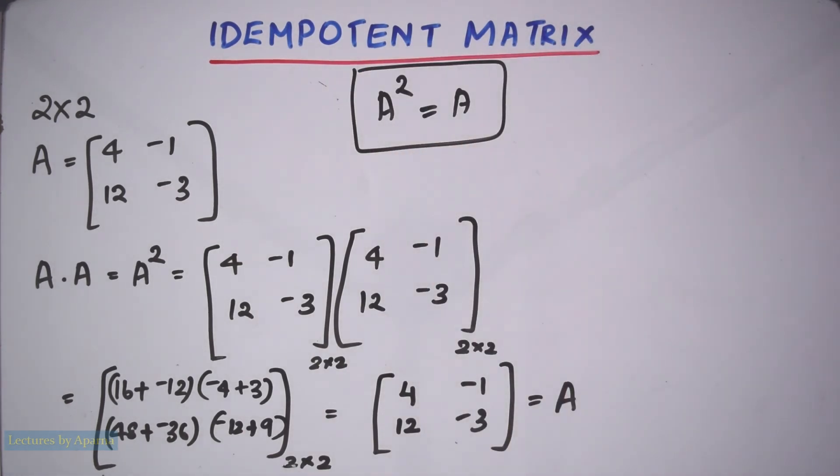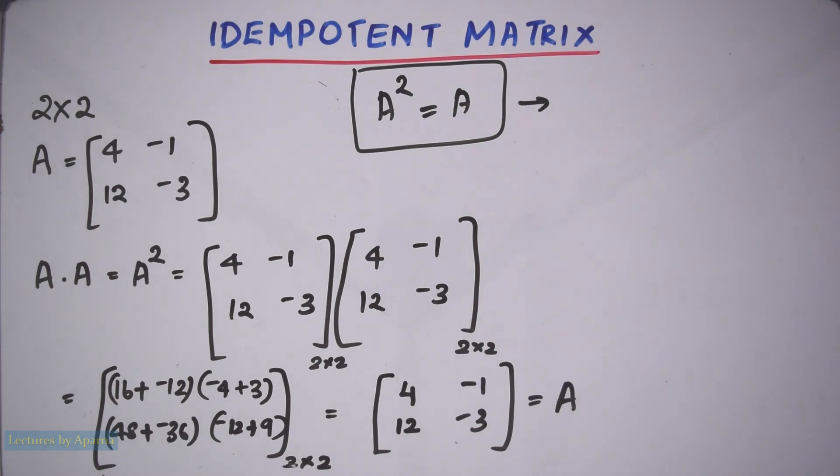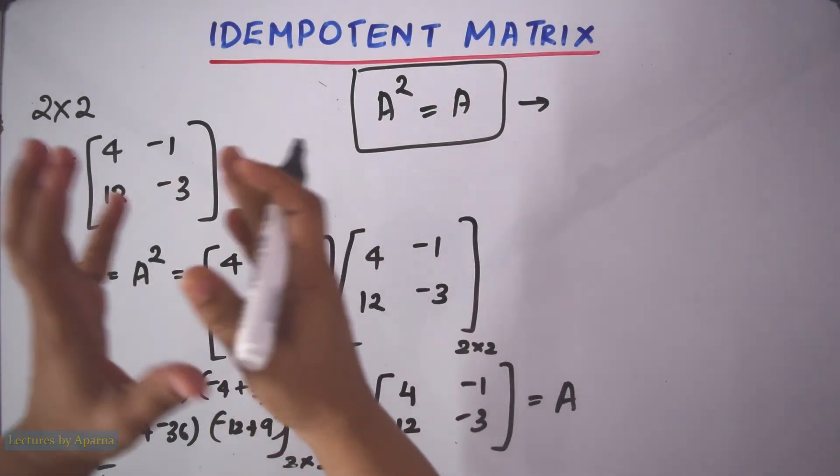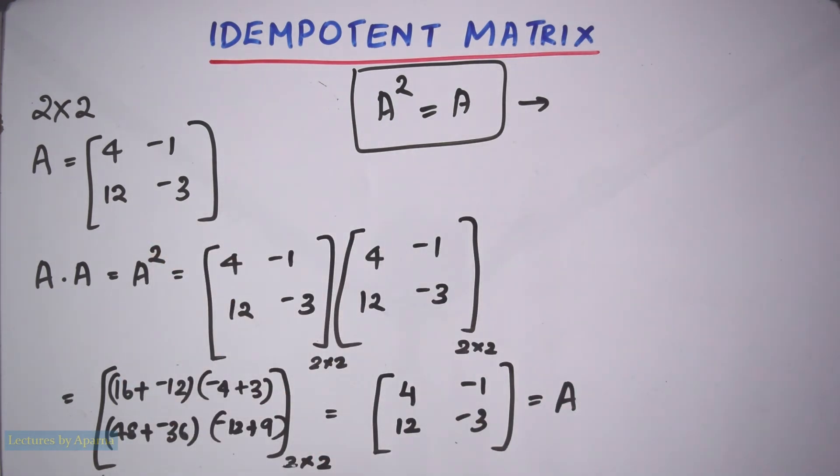A matrix that satisfies this condition is called an idempotent matrix. That is, when you multiply a matrix with itself, if you get the same matrix A, then such a matrix is called an idempotent matrix.